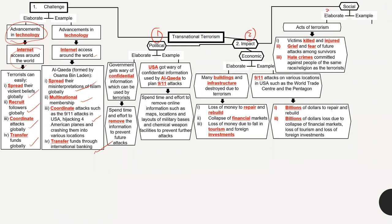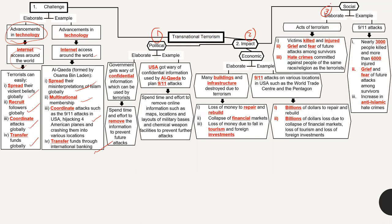For the impact of transnational terrorism, we look at political, economic, and social dimensions. Essay questions might ask which impact is bigger or more devastating. For political impact, governments become very wary — after the USA was attacked using information al-Qaeda gathered online, governments must now spend a lot of time removing harmful online information. In the past, there was less concern, but now governments must carefully monitor what is posted online that could be used against the country.